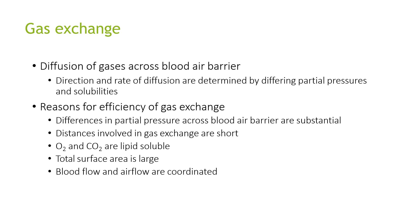The direction and rate of diffusion of gases across the blood-air barrier are determined by differing partial pressures and solubilities. Reasons for the efficiency of gas exchange include: substantial differences in partial pressure across the blood-air barrier, short distances for gas exchange, lipid solubility of oxygen and carbon dioxide, a large total surface area, and coordinated blood flow and air flow. That's the end of today's video — I hope you enjoyed listening and will tune in to the next one. Thank you, bye-bye.